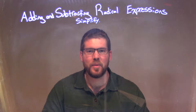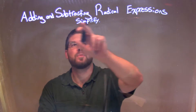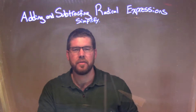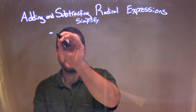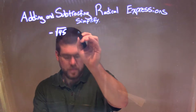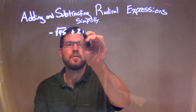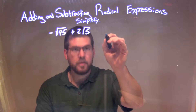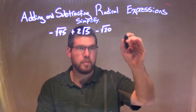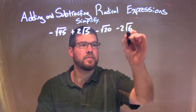Hi, I'm Sean Gannon, and this is MinuteMap. Today I'm going to learn about adding and subtracting radical expressions. So if I was given this expression: minus the square root of 45, plus 2 times the square root of 5, minus the square root of 20, minus 2 square root of 6.